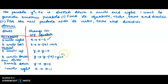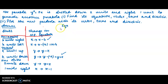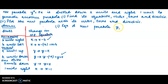So we replace y by y plus 2 and x by x minus 1 in y² = 8x. The equation of the new parabola is (y + 2)² = 8(x − 1).